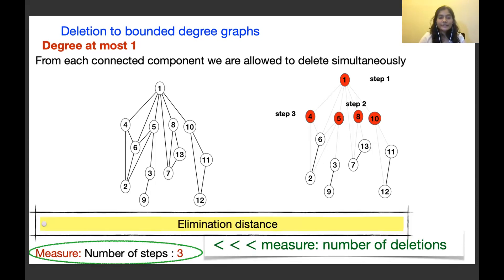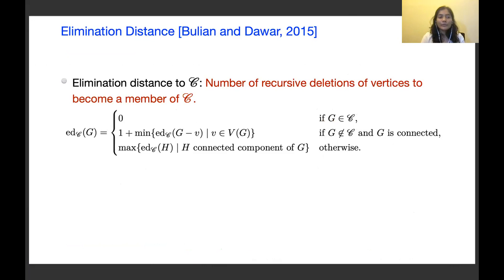This has been studied in the literature and is known as elimination distance, introduced by Bulian and Dawar. More formally, elimination distance to a graph class C is the number of recursive deletions of vertices required to become a member of C. If your graph is already in C, elimination distance is 0. If connected, compute it as 1 plus the minimum elimination distance of G minus v over all vertices v. If disconnected, take the maximum over connected components.